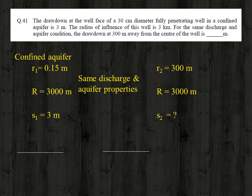For the same discharge and aquifer properties, a second set of parameters is given: r2 is 300 meter, and the radius of influence remains 3000 meter. We need to find the drawdown for this second condition.